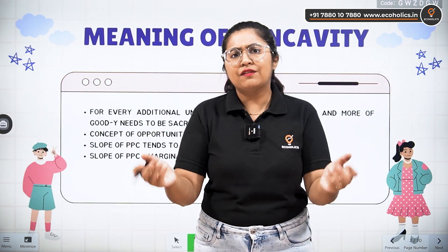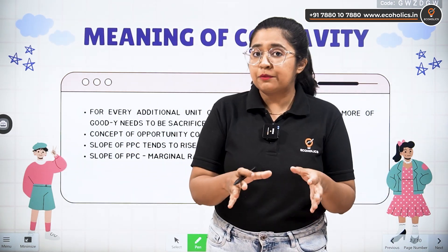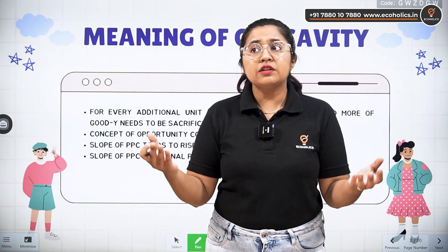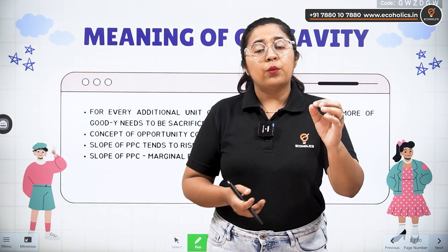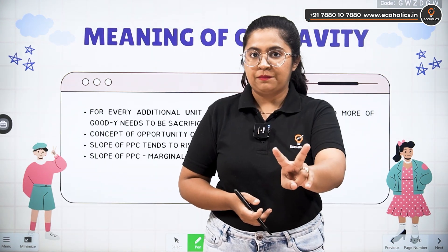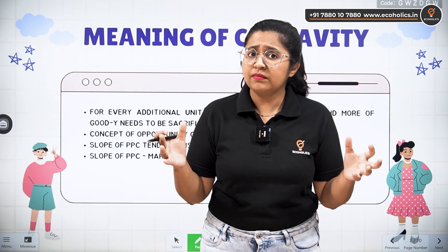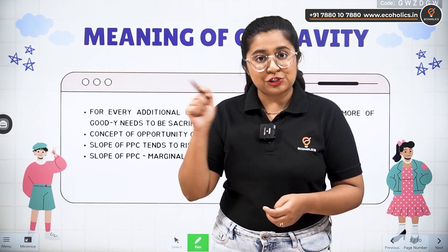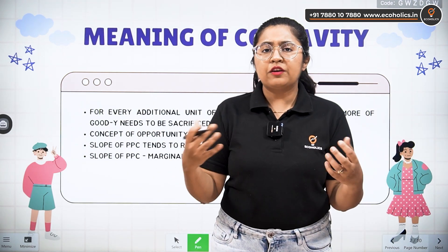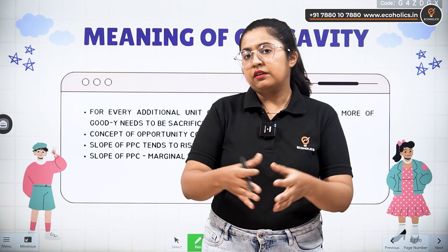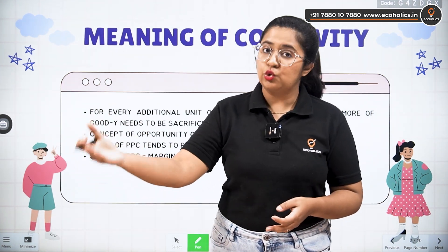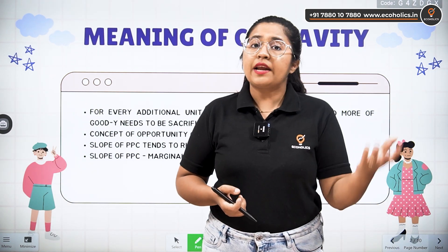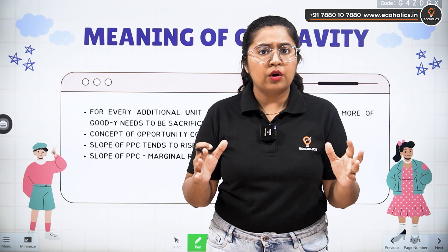The PPC talks about the potential production level that the economy can achieve. Imagine the economy has given resources and technology, kept constant for a specific time period. With the given resources, we can only produce two goods in a certain combination. For example, let's assume we are talking about the agriculture sector — with a certain piece of land, either we can produce sugarcane or we can produce wheat or rice or any other agrarian crop.